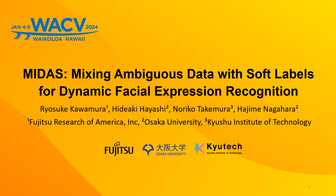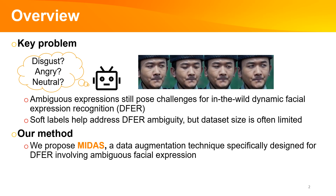Let's begin with the overview of this presentation. We'll start with a look at the main hurdle in our research: the ambiguity of facial expressions in dynamic scenarios. Take a look at the images on the screen. Here, we have a single individual displaying expressions that could be interpreted as disgust, anger, or even neutrality. This ambiguity poses a significant challenge for accurate recognition.